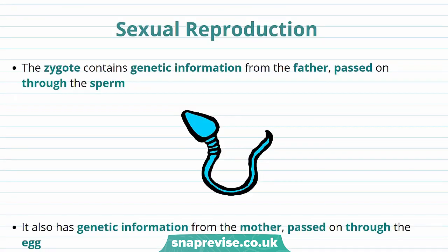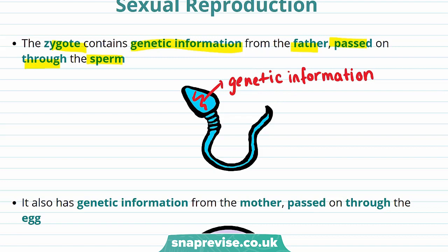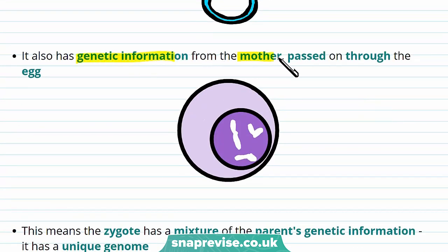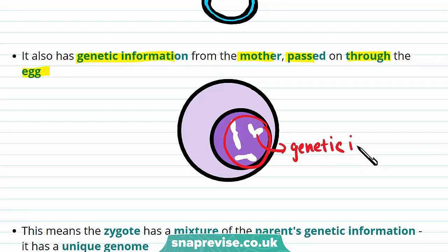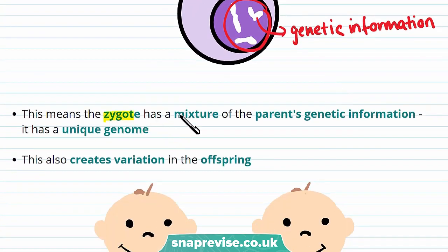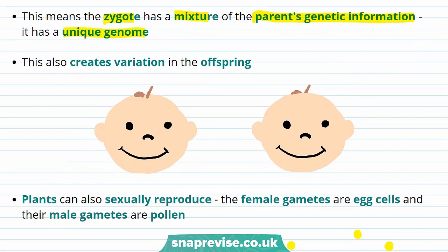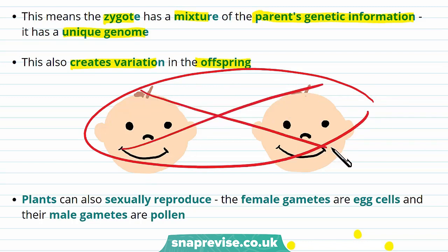The zygote also contains genetic information from the father, passed on through the sperm — the genetic information is found in the head of the sperm. The zygote formed after fertilisation also has genetic information from the mother, passed on through the egg, which is in the nucleus of the egg cell. As both the egg cell and sperm cell combine to create a zygote, it means the zygote has a mixture of the parents' genetic information, giving it a unique genome and creating variation in the offspring. Unlike mitosis, the offspring aren't genetically identical to the parent.